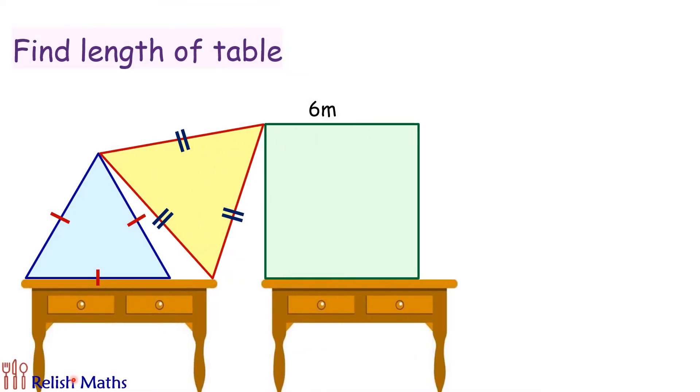So for our solution let's first name the triangles. We will call this blue triangle as triangle ABC. This vertex we'll call D and these two E and F. We have to find the length of the table, which is nothing but BD. So basically we have to find the length BD.